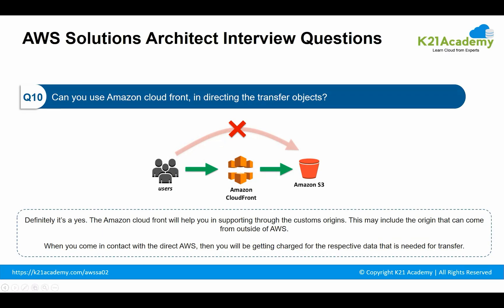The next question: can you use Amazon CloudFront to direct the transfer of objects? Definitely, yes. Amazon CloudFront supports custom origins, which may include origins from outside of AWS. When you connect directly through AWS, you will be charged for the respective data that needs to be transferred.